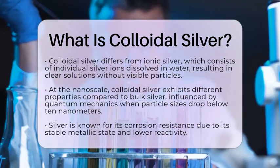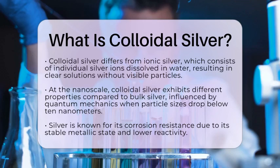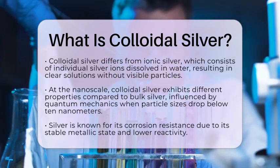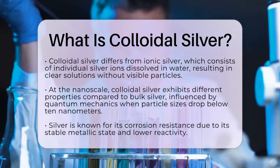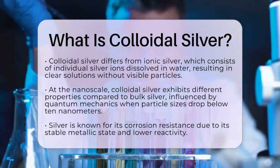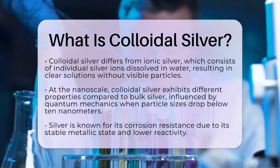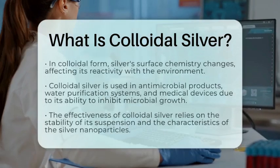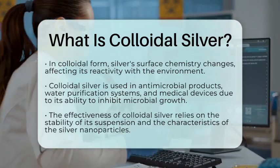In the field of materials science and chemistry education, understanding the corrosion resistance of silver is quite interesting. Silver is known for its ability to resist corrosion, which is partly due to its stable metallic state and lower reactivity compared to many other metals. However, when silver is in colloidal form, its surface chemistry changes, which can affect how it reacts with its environment.